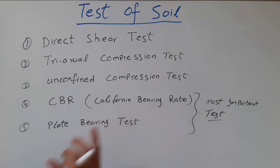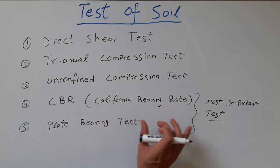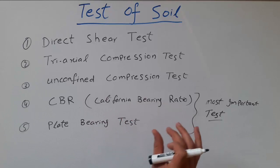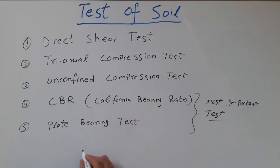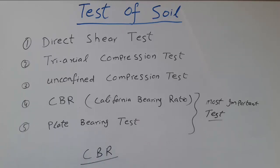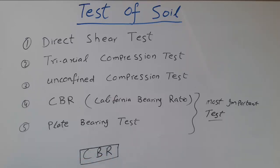I'm going to explain a little bit about the CBR test because this test is often used in labs as well as in the field. CBR is the California bearing ratio test and the purpose of this test is to calculate the strength of the flexible pavement subgrade soil. This is how we perform the test in order to find out the strength of the flexible pavement subgrade.